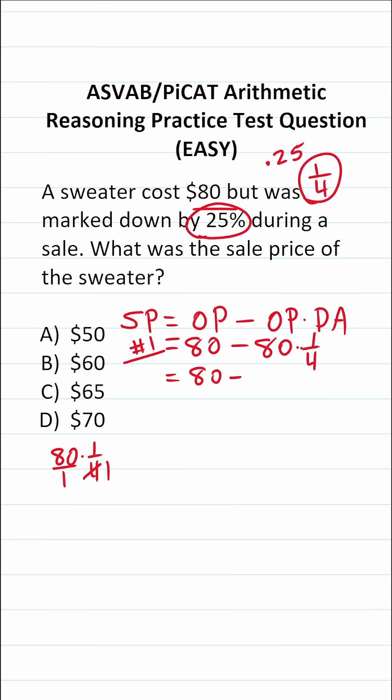Four goes into four one time. Four goes into eight two times. Therefore, it goes into 80 twenty times. This is 20 over one, which is 20 times one over one. 20 times one is 20. So this becomes 80 minus 20, which is 60.